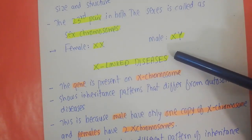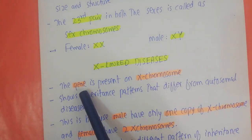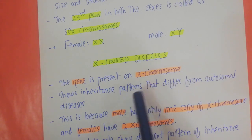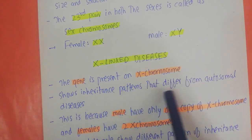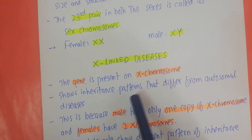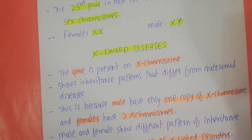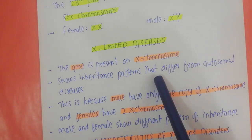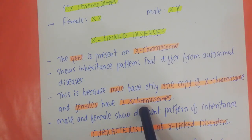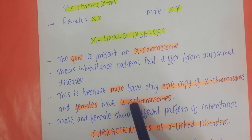X-linked diseases mean that the gene for a particular disease is present on the X chromosome. Genes on sex chromosomes show an inheritance pattern that differs from autosomal diseases. The reason for this difference is that males have only one copy of the X chromosome while females have two X chromosomes, so the pattern of inheritance differs between males and females.